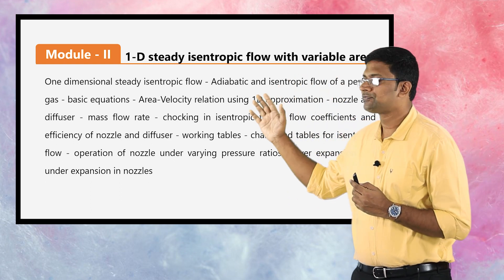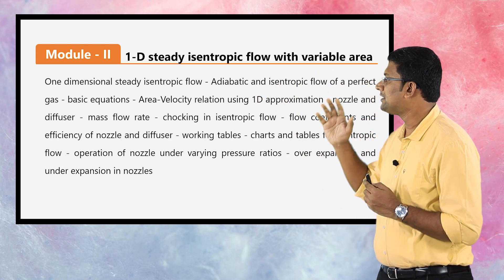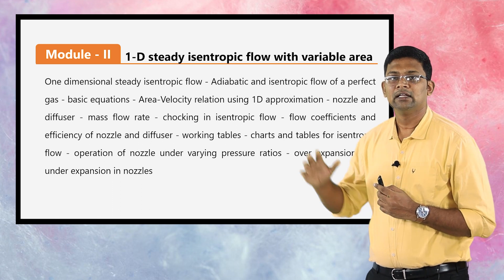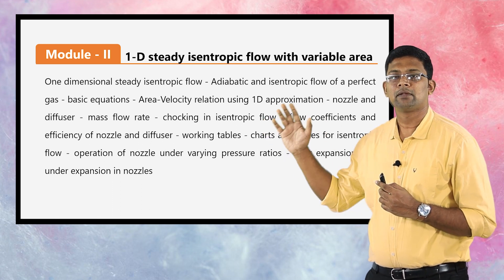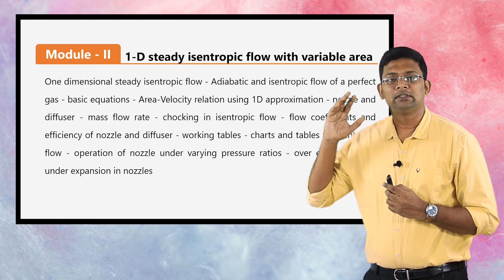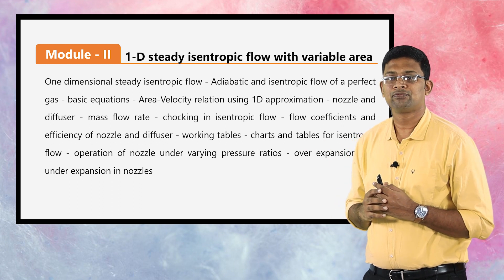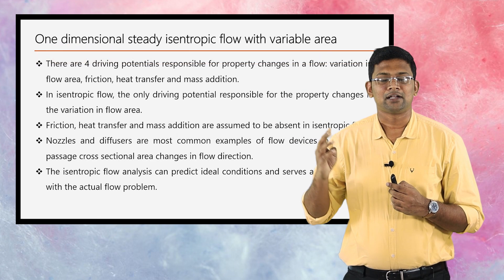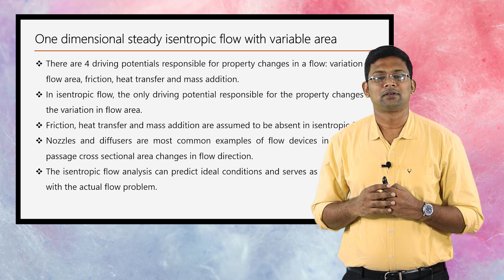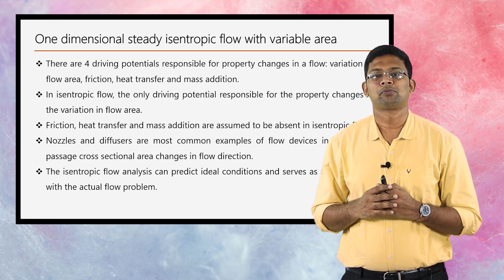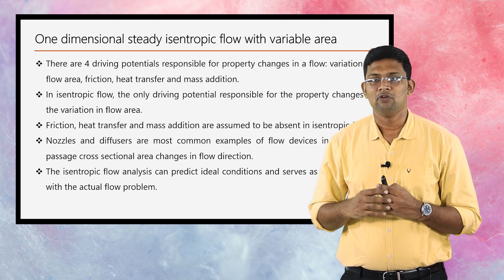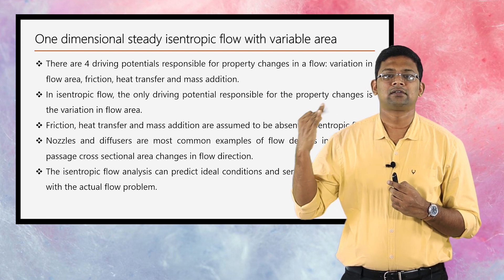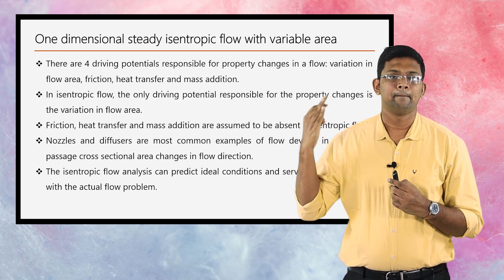This is the syllabus for your second module as per the APJ Abdul Kalam Kerala Technological University. In this module we are basically discussing about the one dimensional steady isentropic flow with variable cross-section. There are mainly four driving potentials responsible for property changes in a flow: variation in flow area, friction, heat transfer, and mass addition.